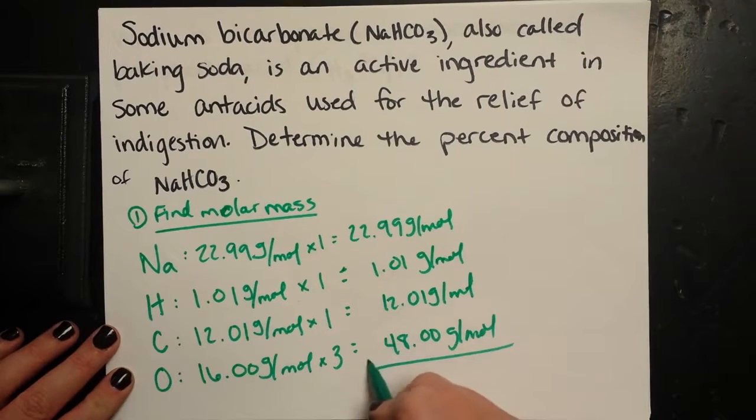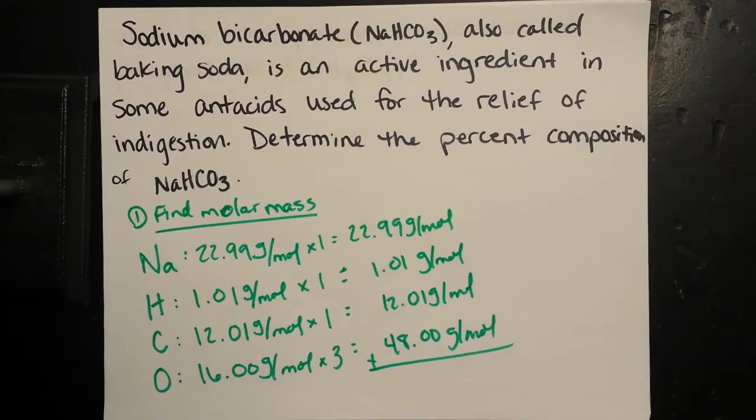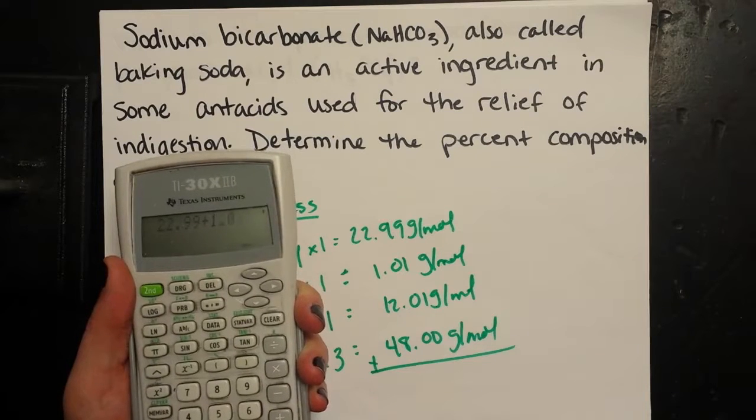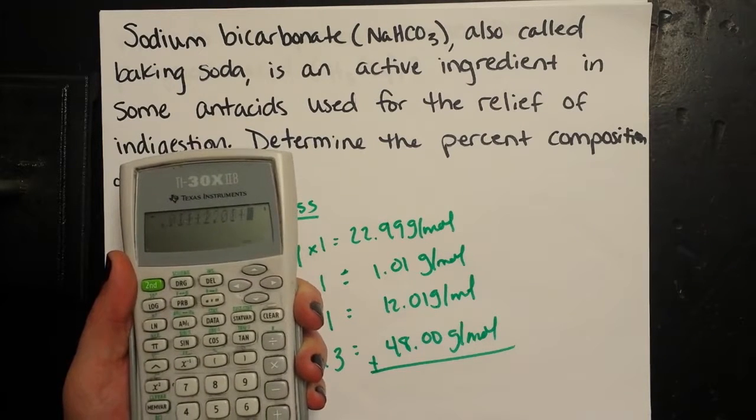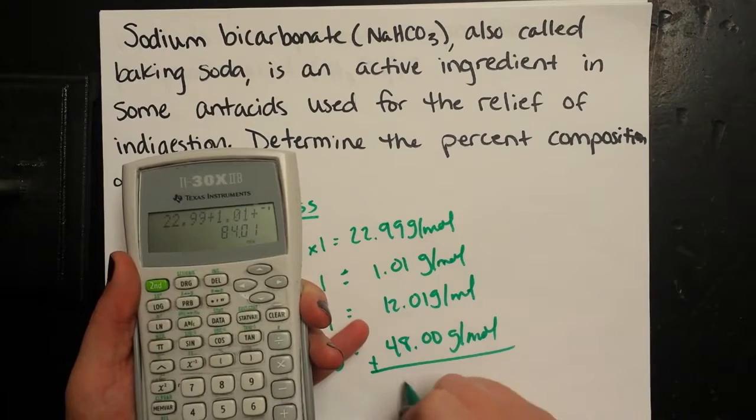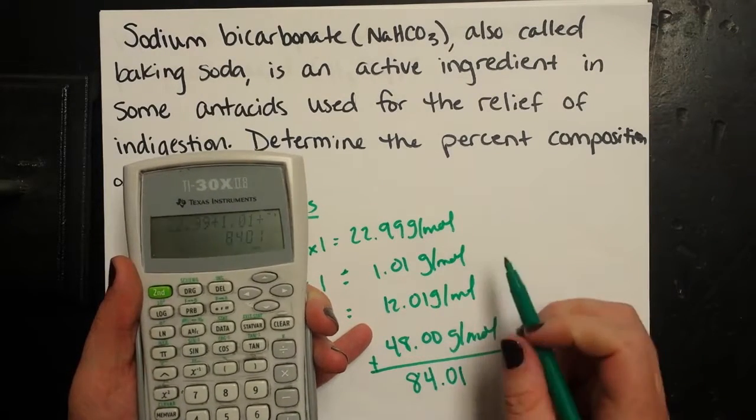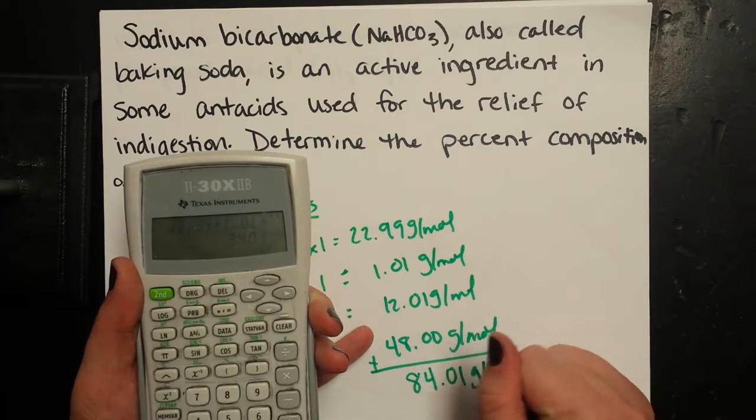So the molar mass of my compound is going to be the sum of all of these, just like we've been doing. So the molar mass of sodium bicarbonate would be 84.01 grams per mole.